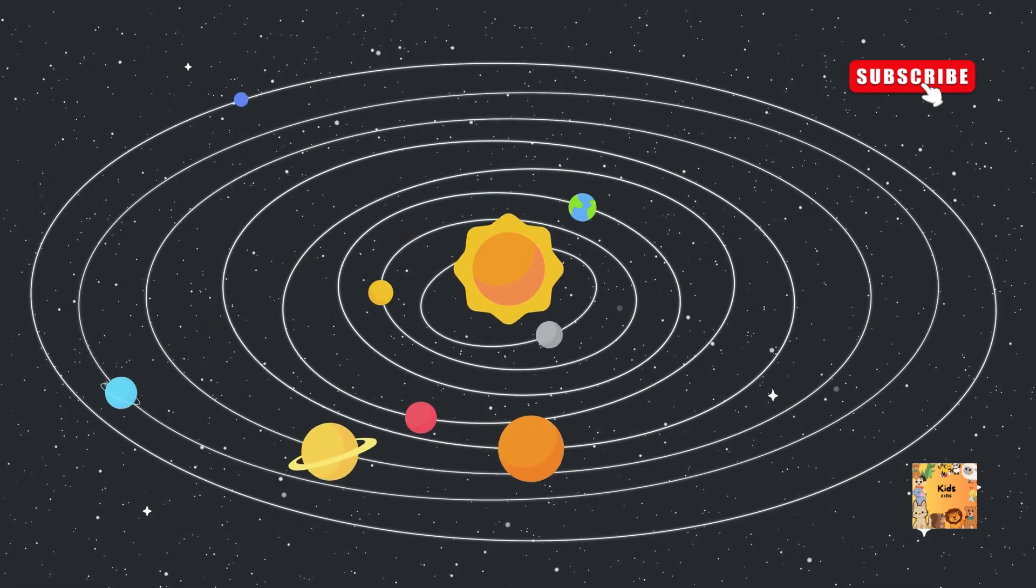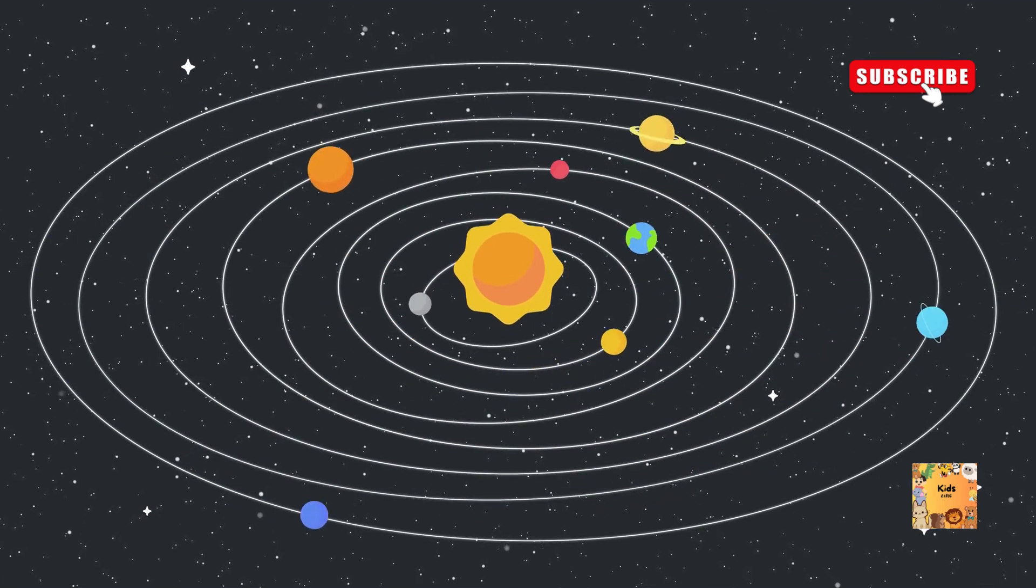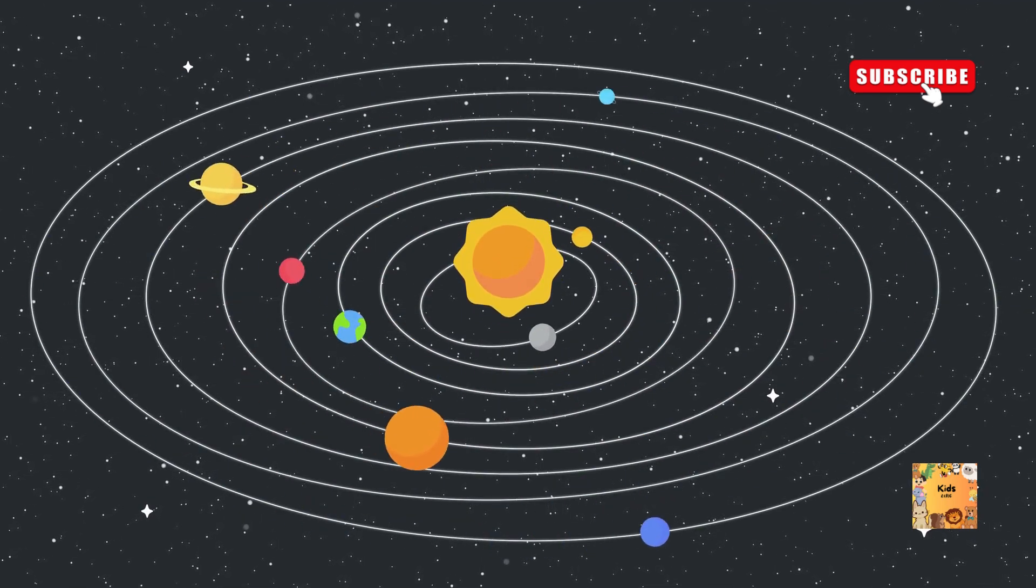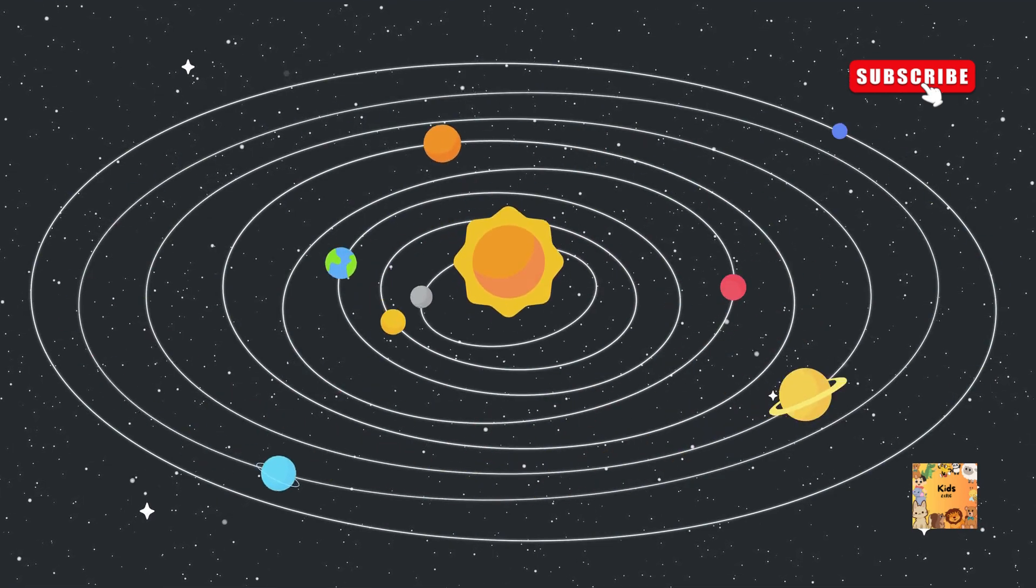Planets. There are eight planets in our solar system that revolve around the sun. They are Mercury, Venus, Earth, Mars, Jupiter, Saturn, Uranus, and Neptune.